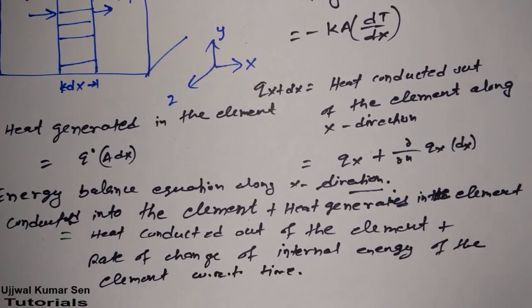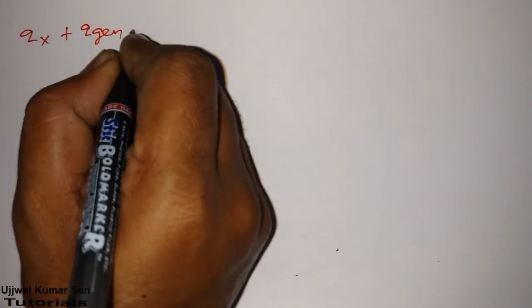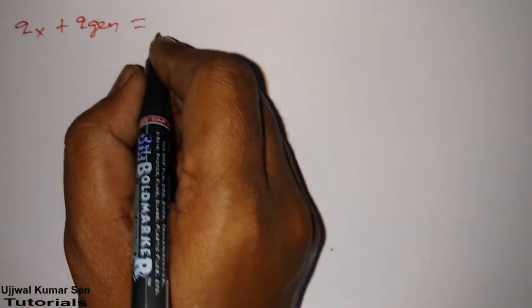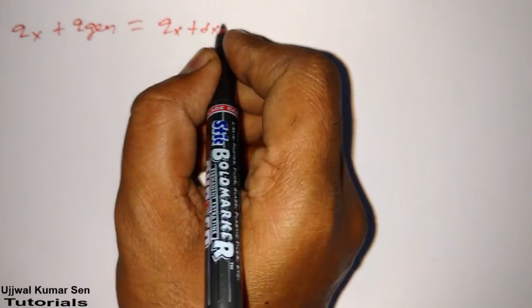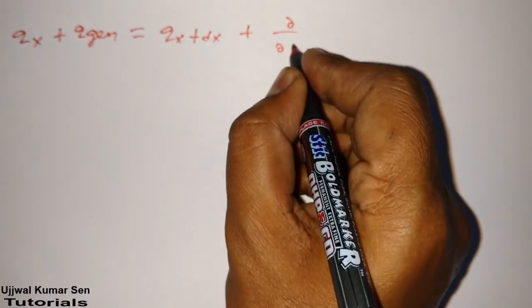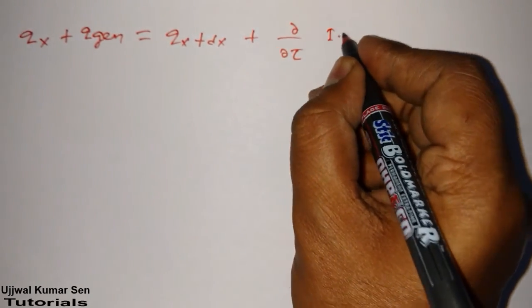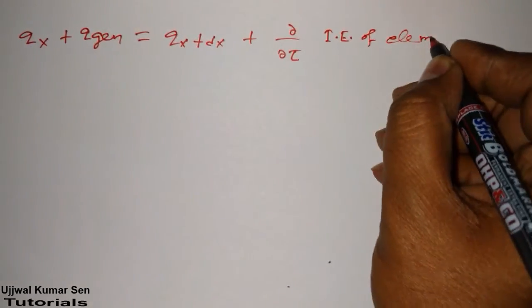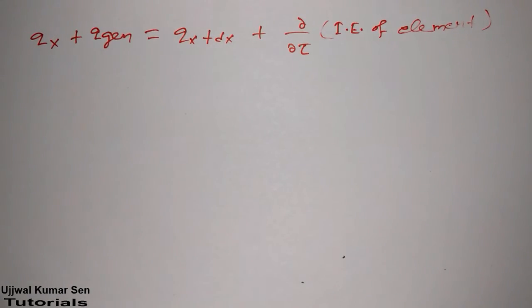Let me use another color so it will be easier to understand. Writing this in mathematical form: QX + Q_generation = QX+DX + (∂/∂τ)(internal energy of element). This gives us: QX + Q_generation = QX + (∂QX/∂x)·DX + (∂/∂τ)(M·Cp·T), where M is the mass of the element. Since density = mass/volume, mass = ρ·V.